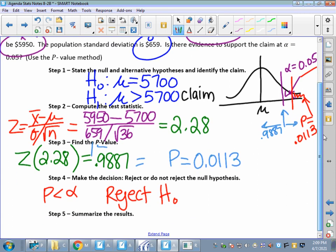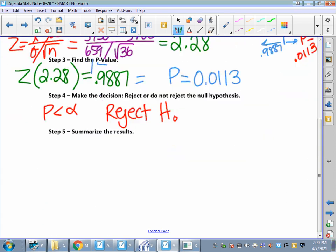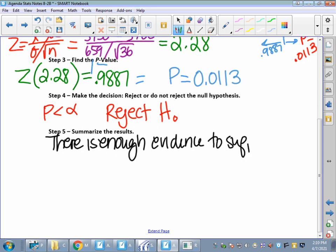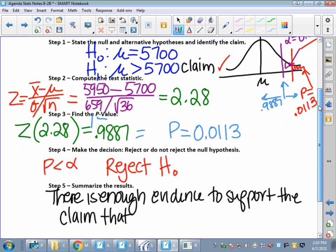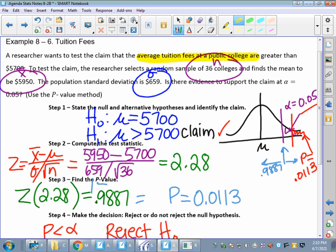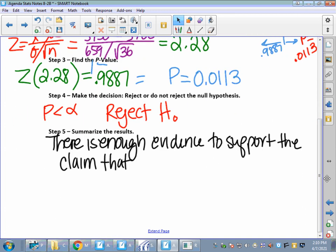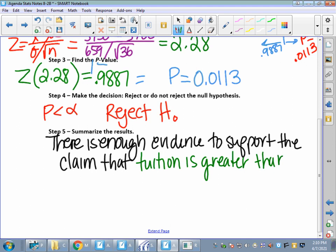Last step, Step 5. I am rejecting H sub O, and my claim is H sub 1. So, I go to my little table, and I figure out that I say, there is enough evidence to support the claim. That's straight off the table. What is the claim? The claim is that tuition and fees are greater than $5,700, right? So, that's what I put in this last statement. There is enough evidence to support the claim that tuition is greater than $5,700. Those of you who are looking at colleges and universities, you would probably agree with that.